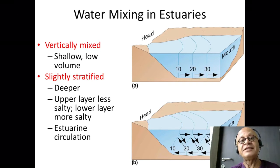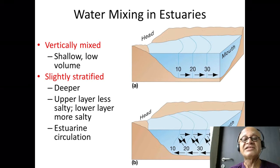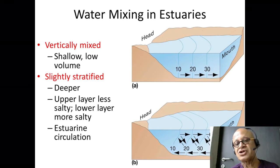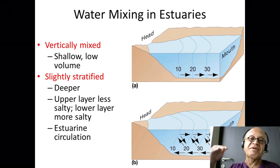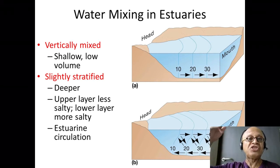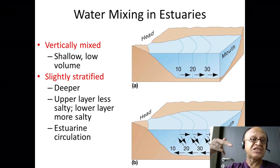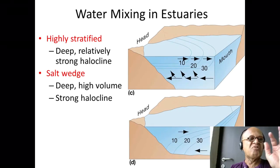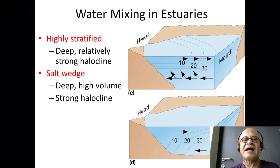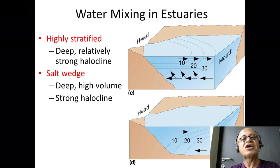If you have a deeper estuary, you can have a slightly stratified estuary. Fresh water is flowing out near the surface, whereas ocean water with higher salinity is coming in at the bottom, and cross-mixing is happening in the vertical direction, depending on how much mixing there is, how much evaporation happens, and what the volume of flow is. Just remember the terminologies — broad categories.